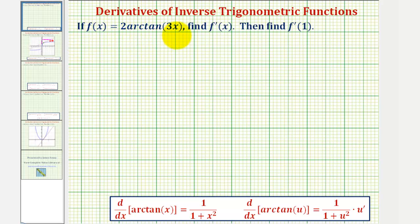If f of x equals two arctangent three x, we want to find f prime of x, the derivative function, then find f prime of one, which will give us the slope of the tangent line at x equals one.